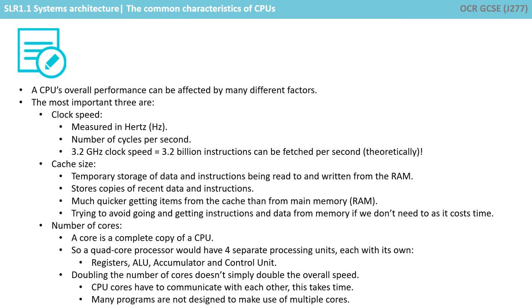So let's just recap what we've been through. A CPU's overall performance can be affected by many different factors. The most important are: clock speed, measured in hertz, which is the number of cycles per second; cache size, a temporary storage of data and instructions being read from and written to memory — it stores copies of recent data and instructions, and it is much quicker getting items from the cache than from main memory; and the number of cores. A core is, in simple terms, a complete copy of the CPU, so a quad core processor would have four separate processing units, each with its own registers, accumulators, ALU and control unit. Remember that doubling the number of cores doesn't simply double the overall speed, CPU cores need to communicate with each other and this takes time, and many programs are not designed to make use of multiple cores.